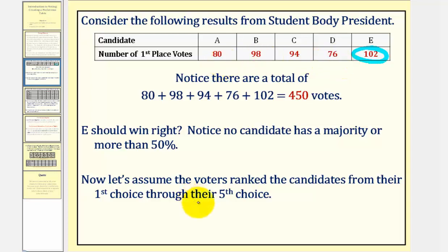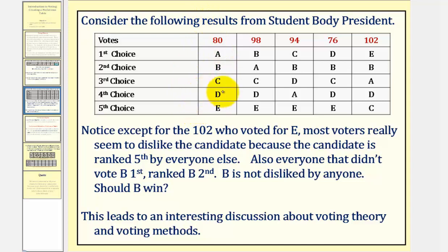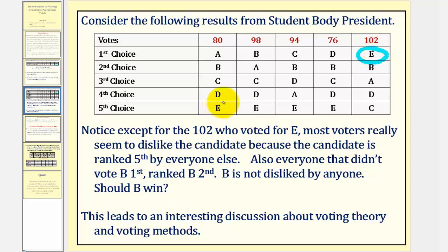Now let's assume that the voters rank the candidates from their first choice through their fifth choice. Here are the results, and this is called a preference table, which we'll define in just a moment. If we focus on candidate E for a moment, notice how except for the 102 who voted E as their first choice, most voters really seem to dislike the candidate, because candidate E is ranked fifth for everyone else.